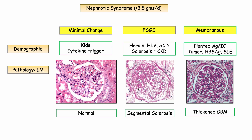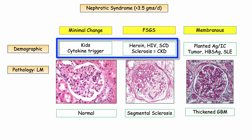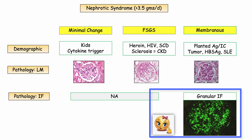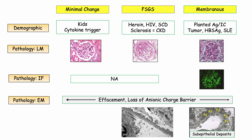Let's summarize. The standout demographic features: a child with a cytokine-provoking trigger for minimal change; a heroin-using or HIV-infected patient for focal segmental, with possibly elevated creatinine based on degree of glomerular scarring. Immunofluorescence won't be mentioned in minimal change or focal segmental. In a membranous nephropathy vignette, you will likely see positive immunofluorescence — so heavy proteinuria plus positive immunofluorescence should make you think membranous. On electron microscopy, all will show foot process effacement and loss of charge barrier; membranous will also have immune complexes in the subepithelial space.